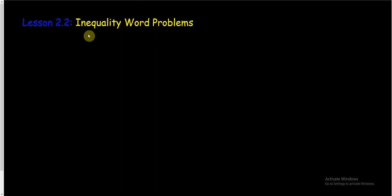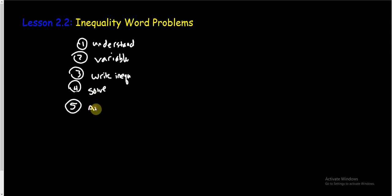We're going to still use our five steps for word problems. We're going to make sure we understand first, so that may mean reading the problem more than once. Then we're going to define a variable. The third step is to write an inequality. The fourth step is we're actually going to solve our inequality, and then the fifth step is to answer the question. These are the steps we used last chapter except it was for equations not inequalities.